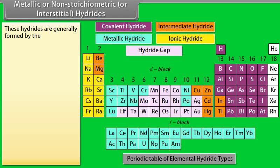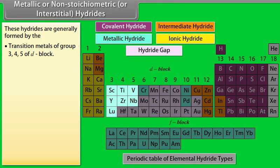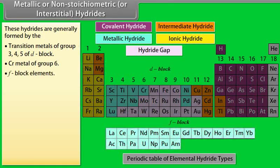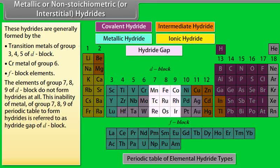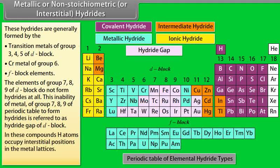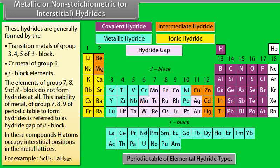Metallic or non-stoichiometric or interstitial hydrides. These hydrides are generally formed by the transition metal of group 3, 4, 5 of d-block, d-block metal of group 6, f-block metals. The elements of group 7, 8, 9 of d-block do not form hydrides at all. This inability of metal of group 7, 8, 9 of periodic table to form hydrides is referred to as hydride gap of d-block. In these compounds, H atoms occupy interstitial positions in the metal lattices. For example, ScH2, LaH2.87.